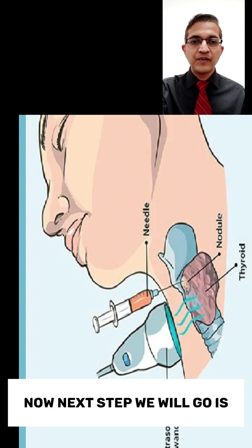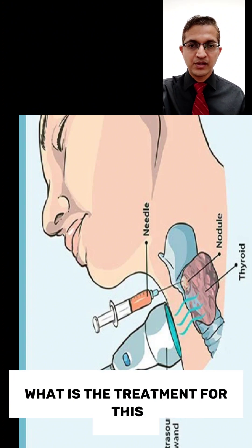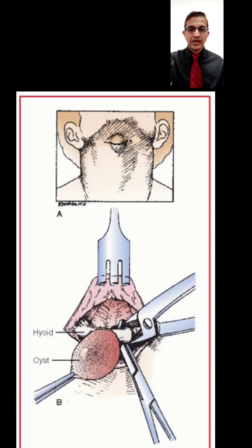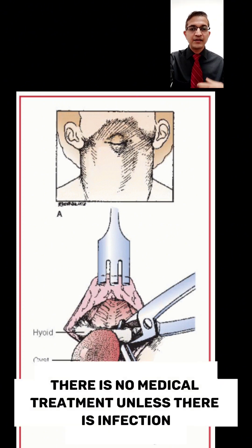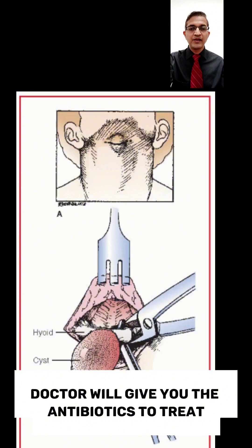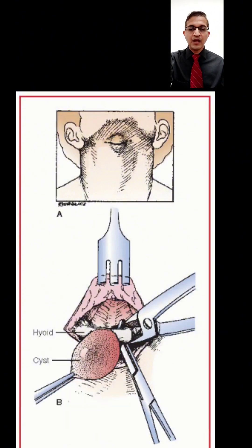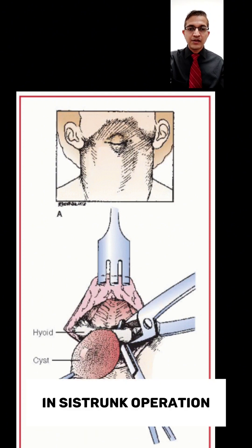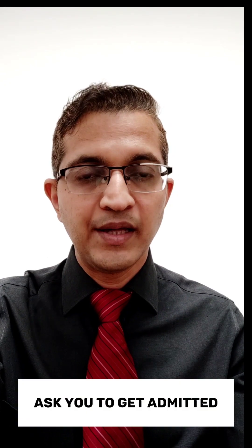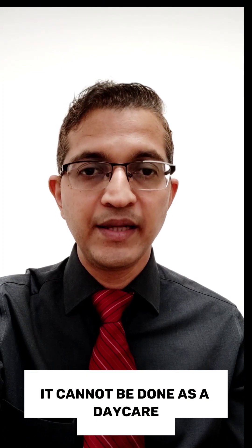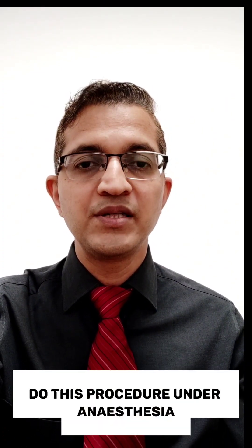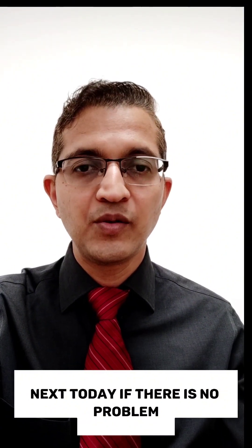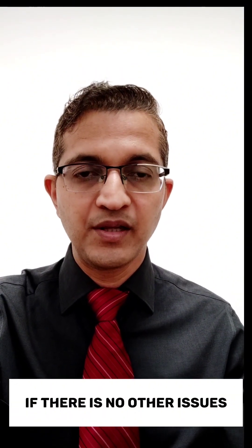The treatment for a thyroglossal cyst is surgery. There is no medical treatment; unless there is infection, in which case the doctor will give antibiotics to treat the infection first. The final treatment is surgery, called the Sistrunk operation. The patient has to be admitted, as this procedure is done under anesthesia — it cannot be done as day care. The patient stays one day, and if there is no problem, the doctor may discharge them the next day.